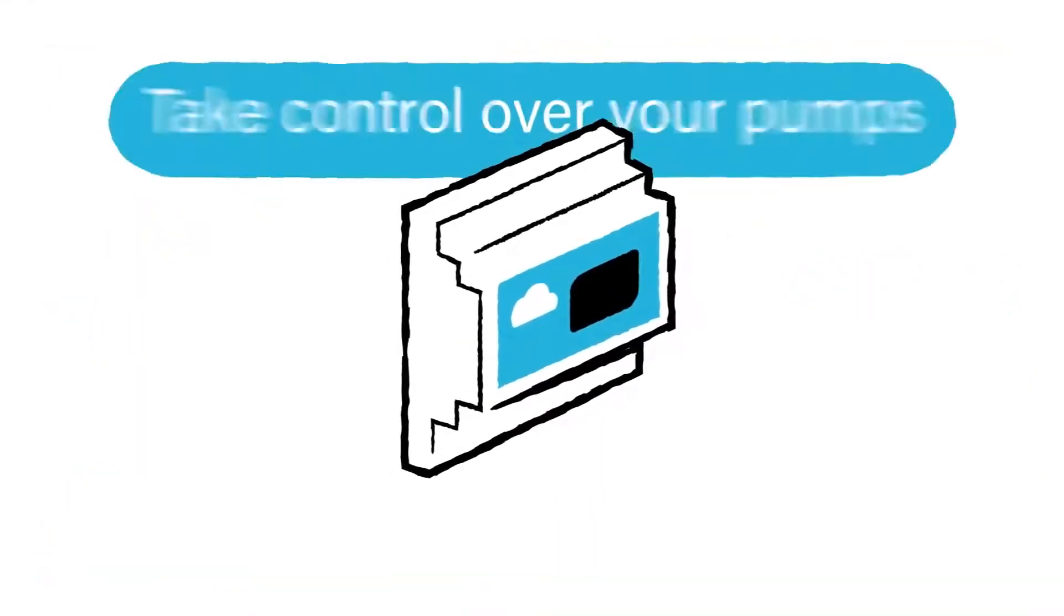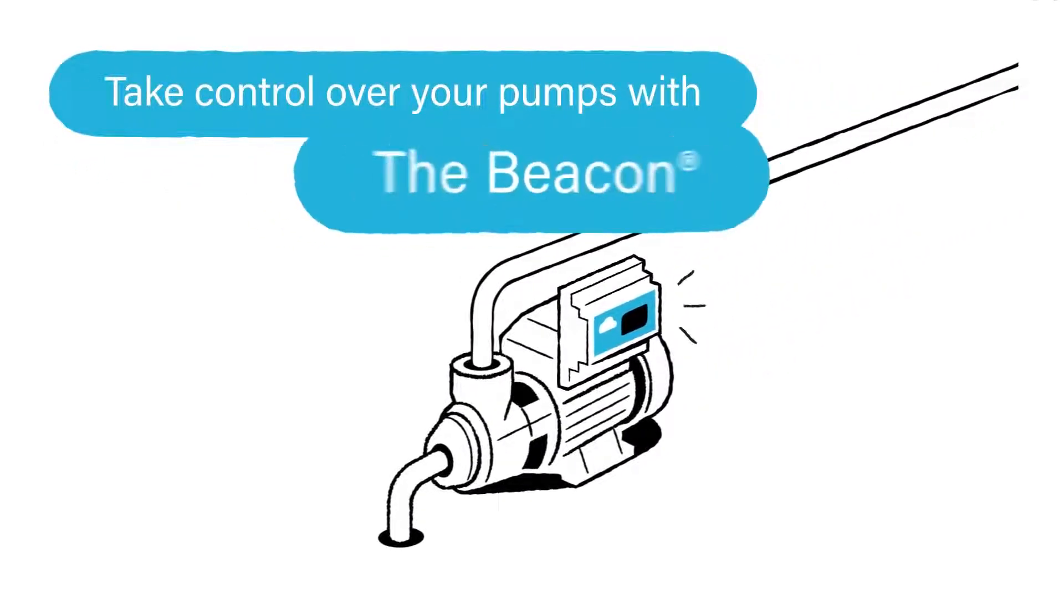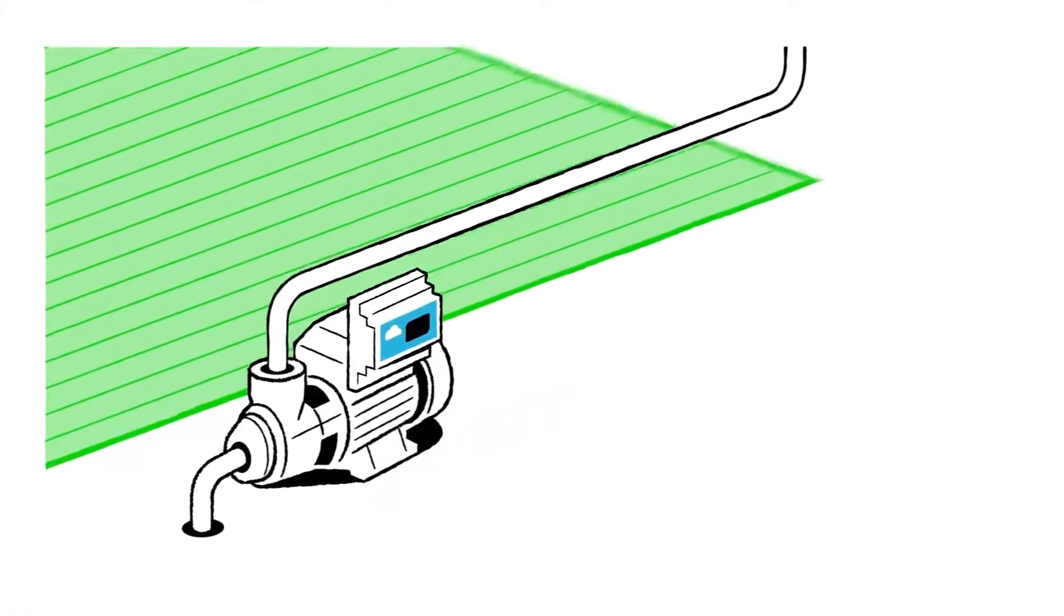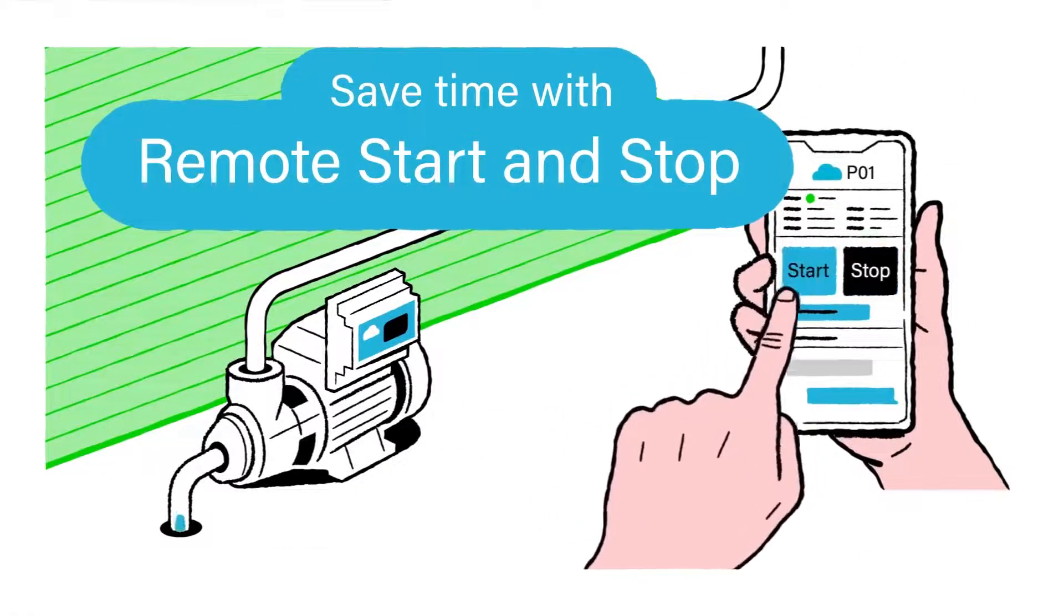With Rain Dancer Beacon, you'll take control over your pumps. You can see the pump status in real time and operate the pump remotely. In case of a fault on the irrigation machine, the pump will be stopped automatically.